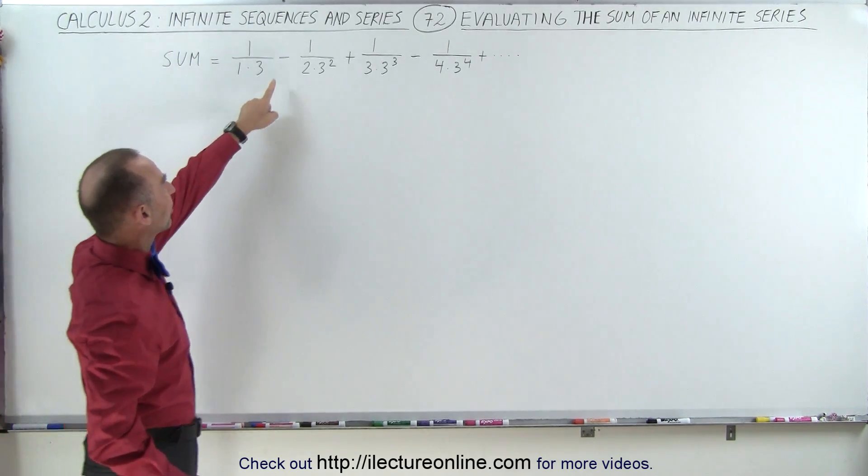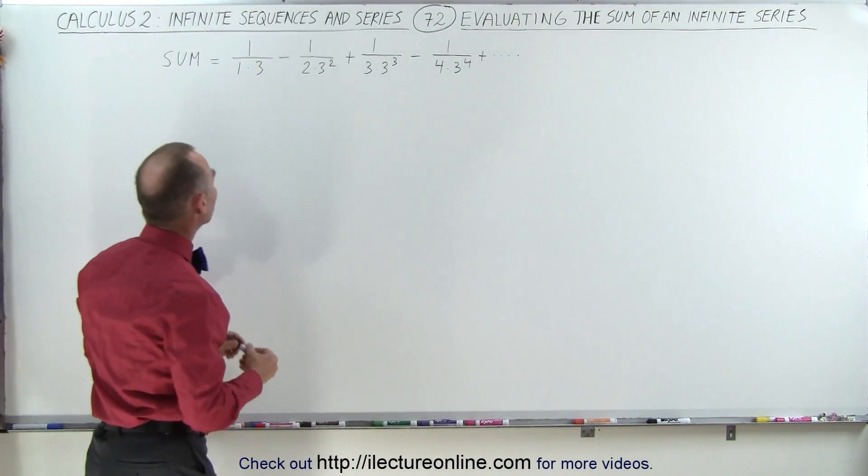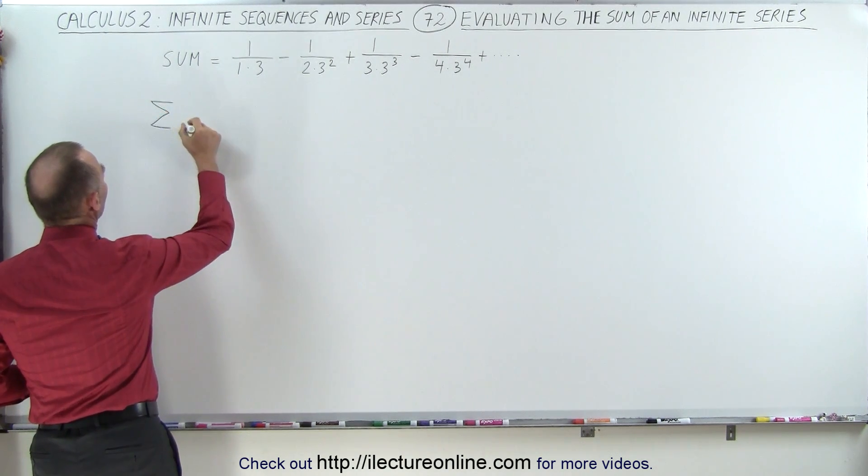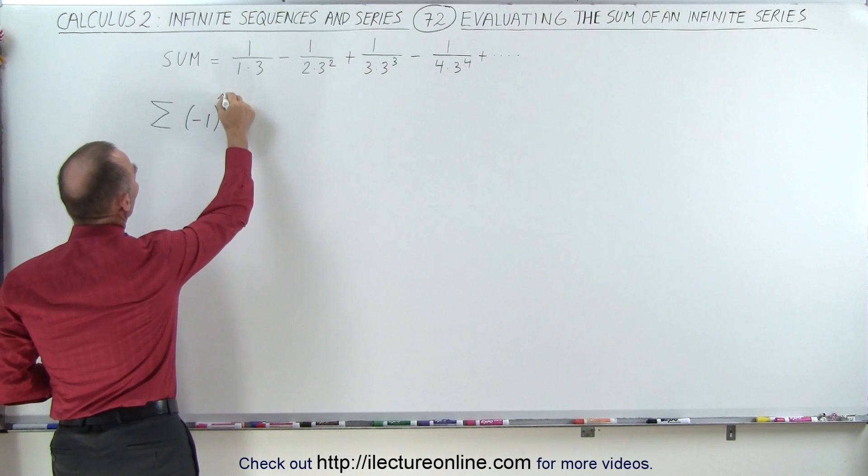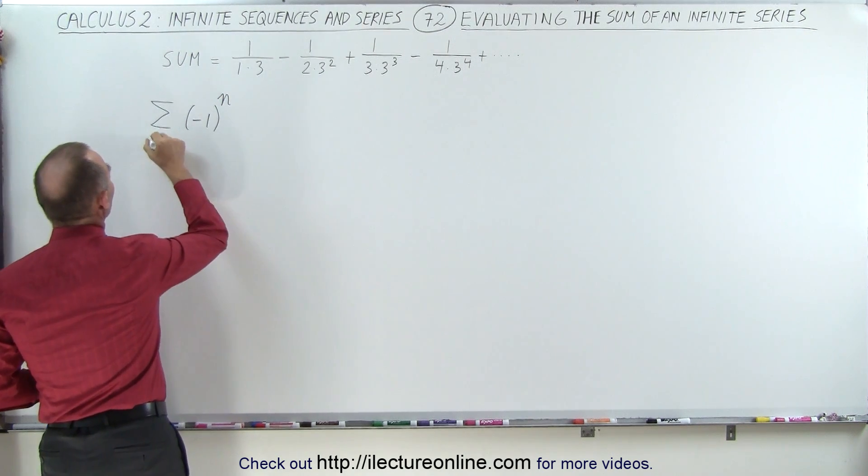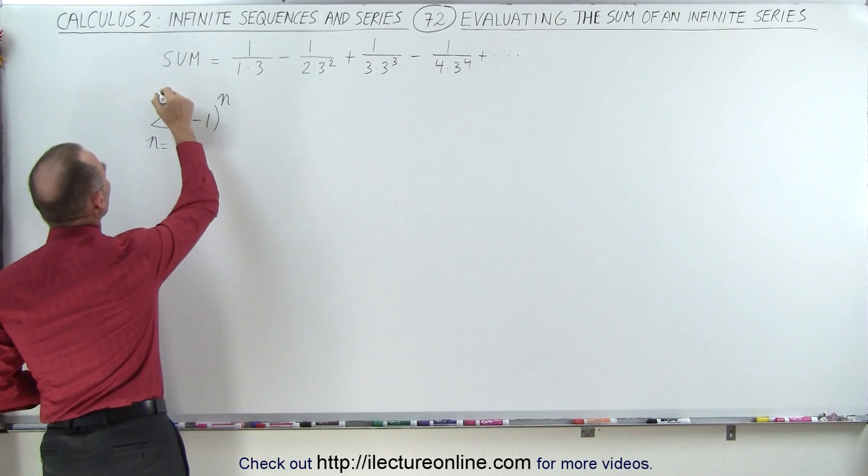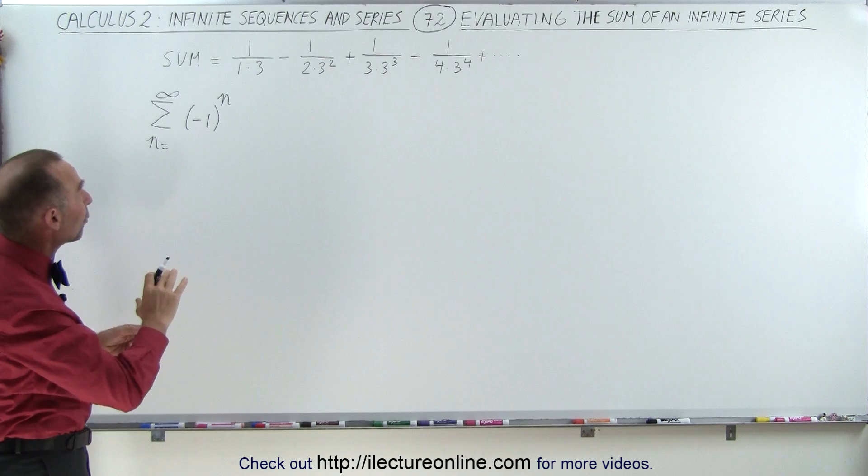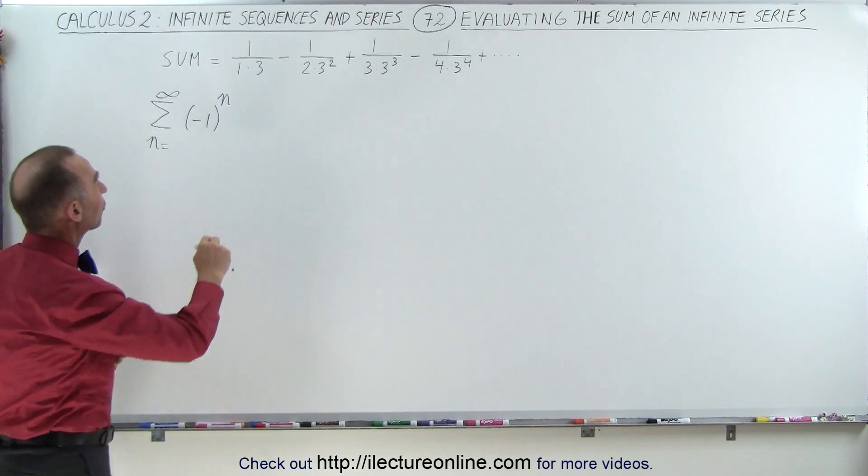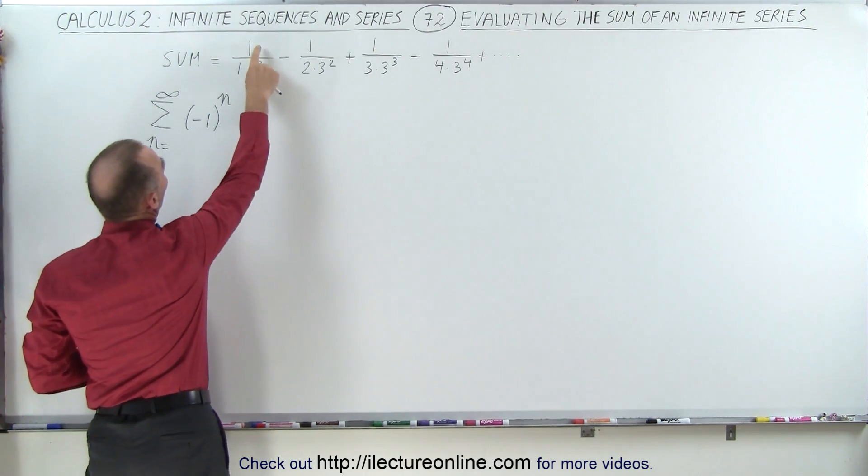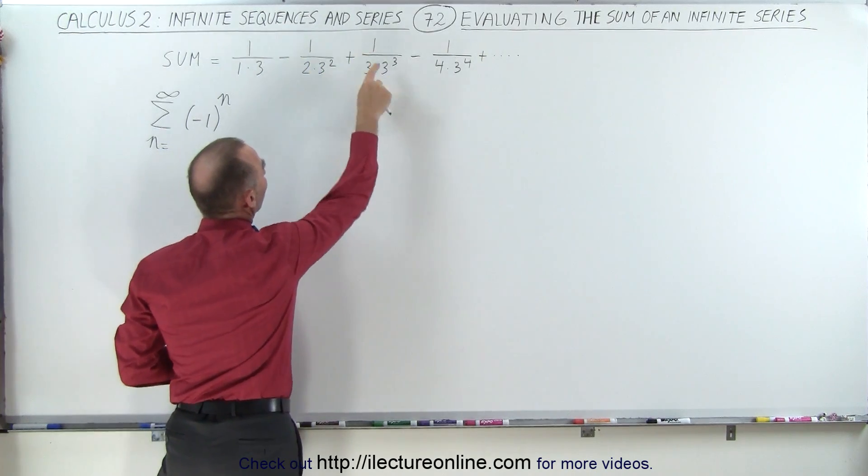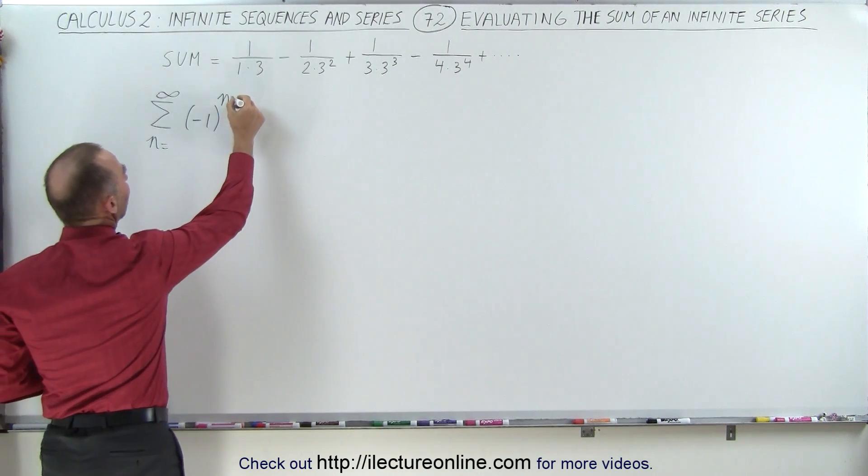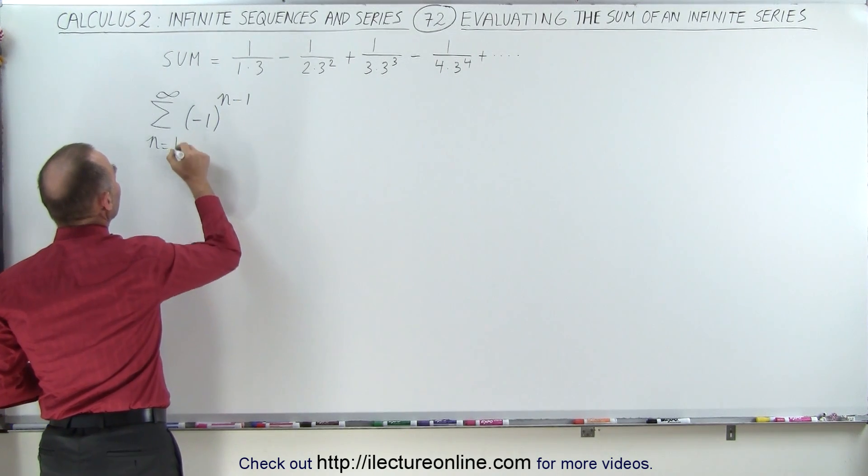So here we can see that the signs alternate: minus, plus, minus, and so forth. So that means we're going to need an infinite sum of minus 1 to the n or n minus 1, from n equals 0 or 1 to infinity. Now, the reason I said 0 or 1 is that depends upon whether or not we have that initial first constant term. But I see 1 over 3, 1 over 3 squared, 1 over 3 cubed. That looks like we don't have the initial constant, so we're going to need n minus 1 and start at n equals 1.